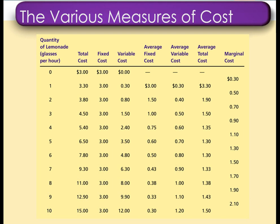As we have discussed in our earlier lecture, average total cost can be calculated using two different methods. We can calculate average total cost by dividing total cost by the number of quantities produced, and we can also calculate average total cost when we add average fixed cost plus average variable cost.